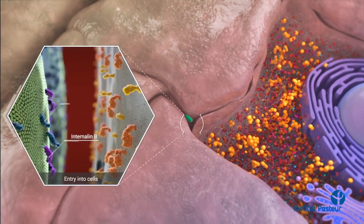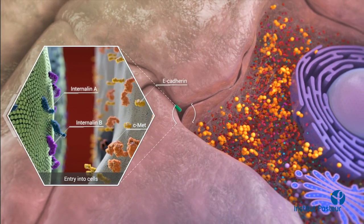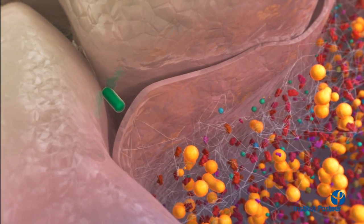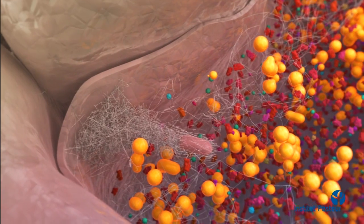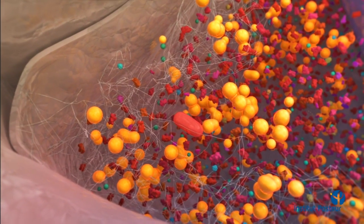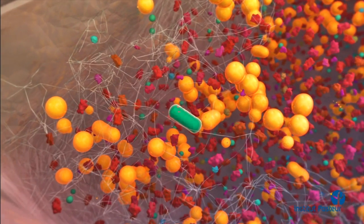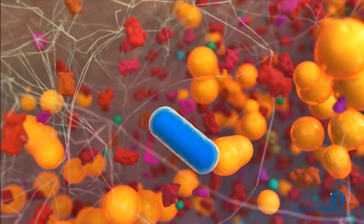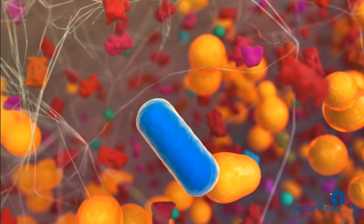The bacterium binds to the receptors E-cadherin and C-Met on the cell membrane and triggers cytoskeletal rearrangements, leading to internalization into the cytoplasm. Once inside the cell, the bacterium secretes LLO and phospholipases to rupture the membrane of the internalization vacuole. It also modifies its surface and becomes resistant to the cell's inner defenses, such as autophagy.